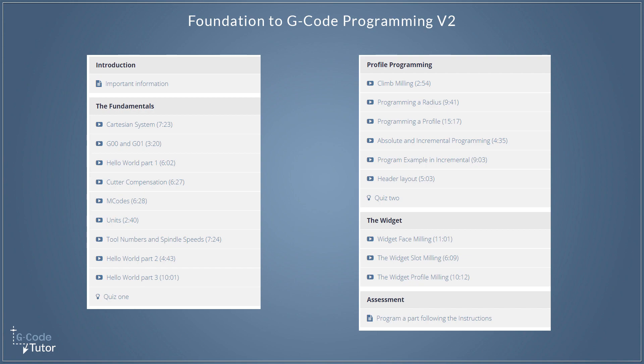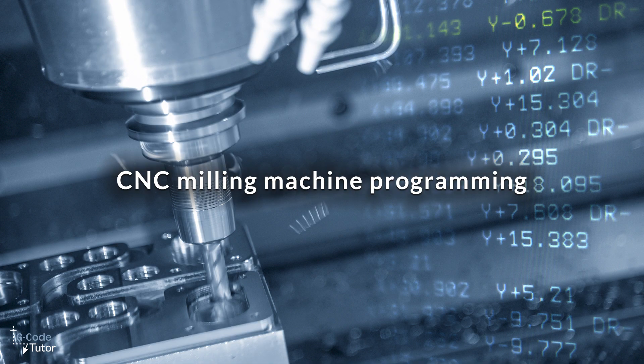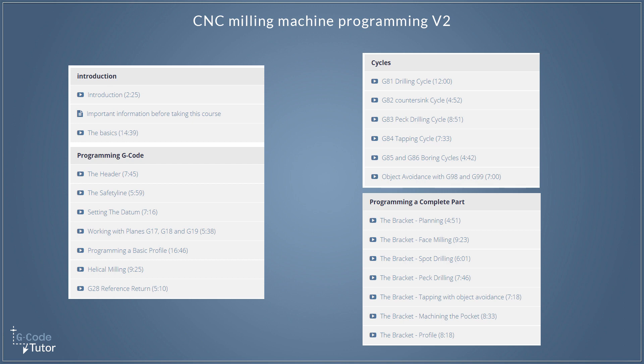The course that follows on from that is the CNC Milling Machine Programming course. This covers everything to program our CNC mills — we go through all the different kinds of gcodes we would use, different cycles, and we also program a complete part. These two courses combined will teach you all you need to know to program a CNC milling machine, starting from scratch with no previous knowledge of gcode.